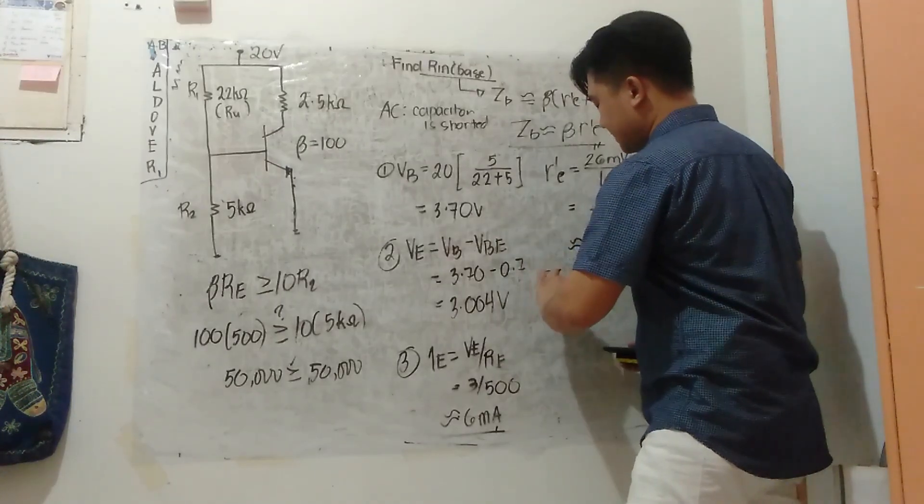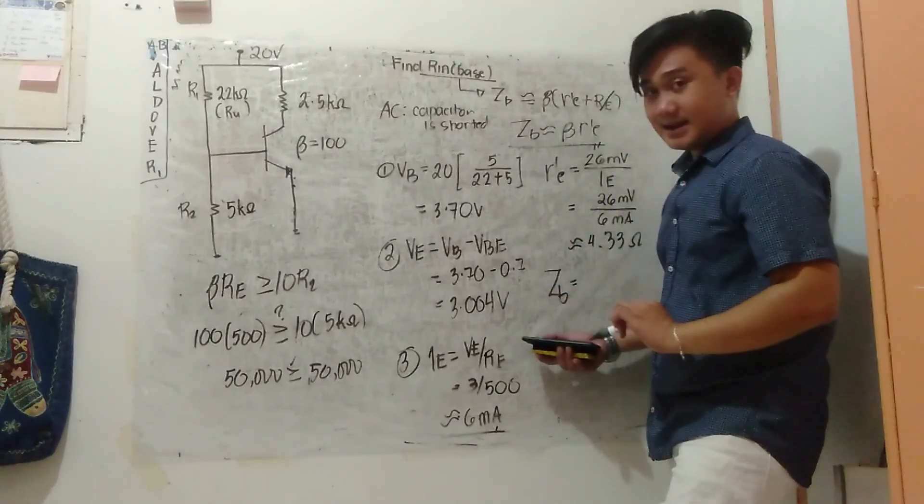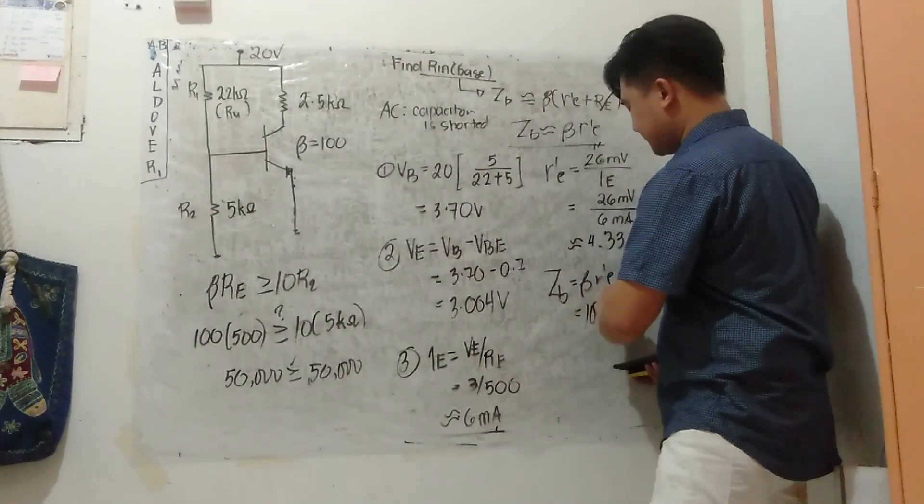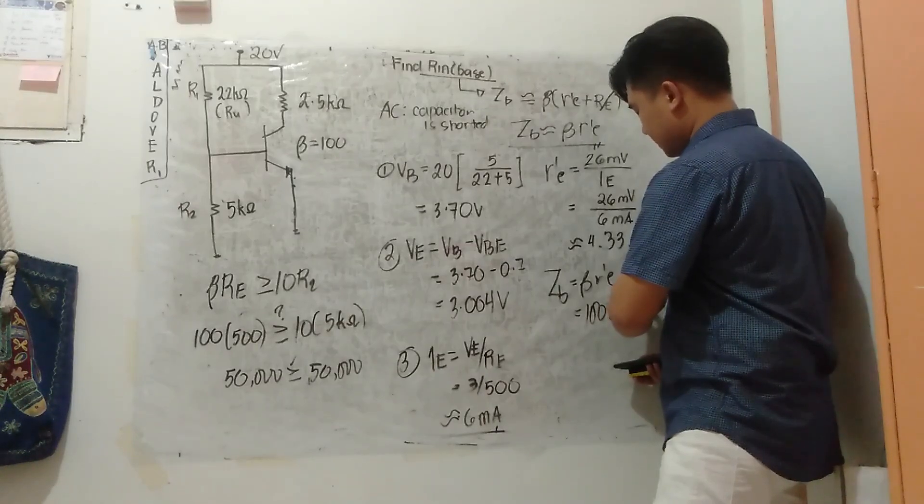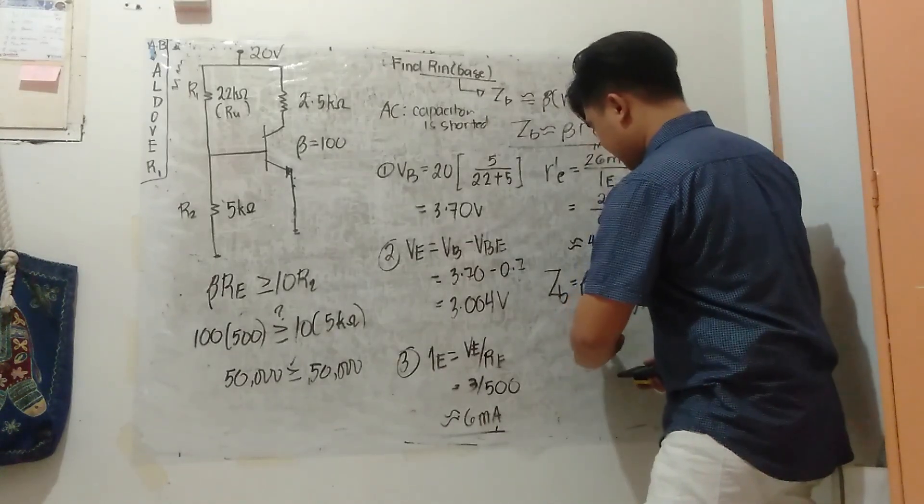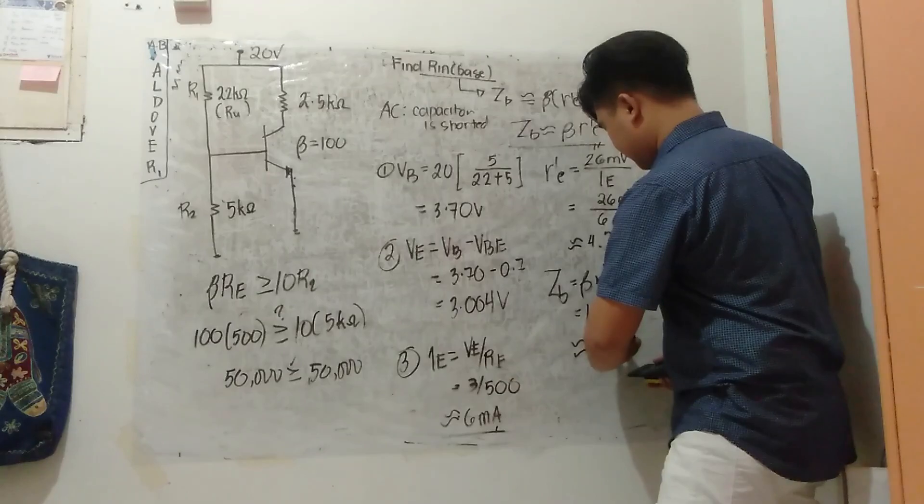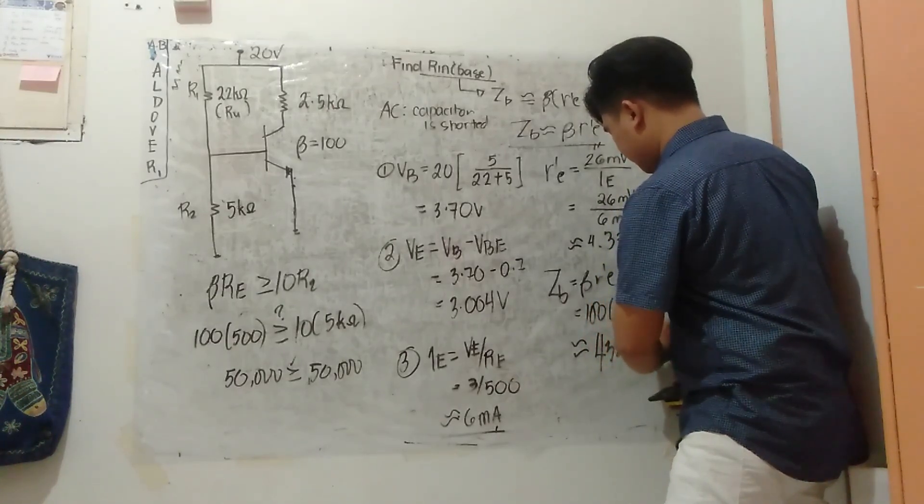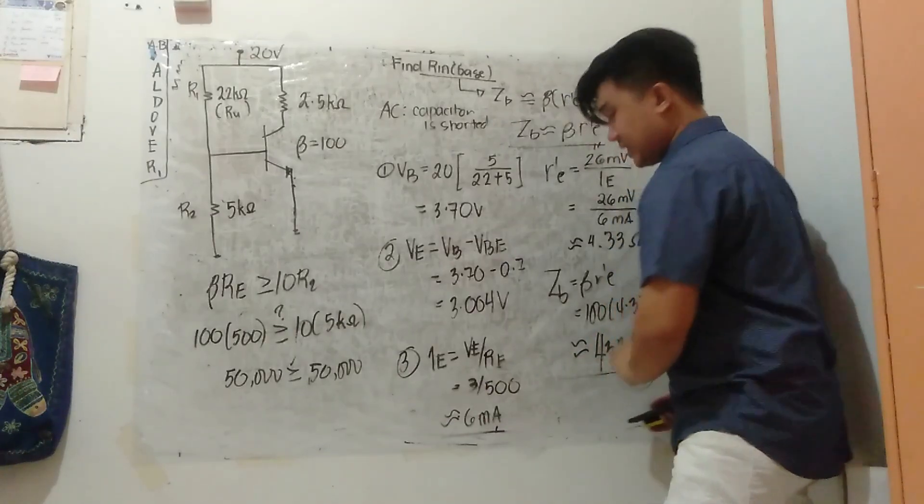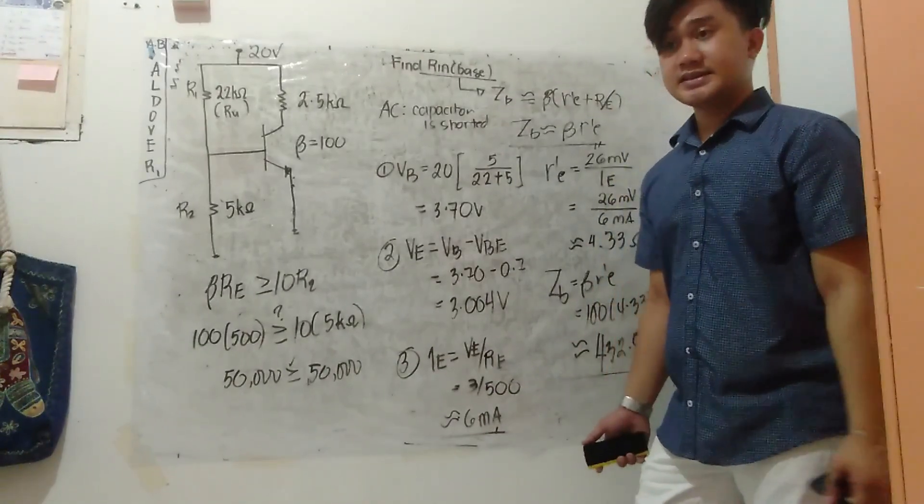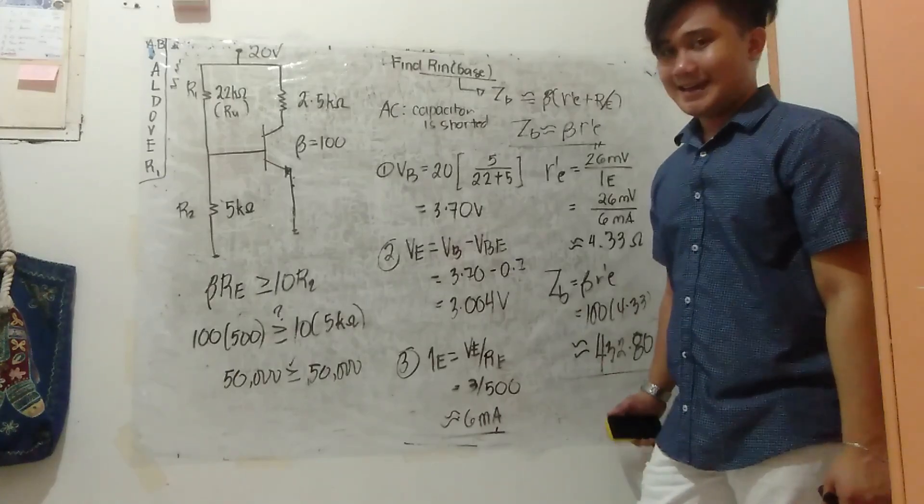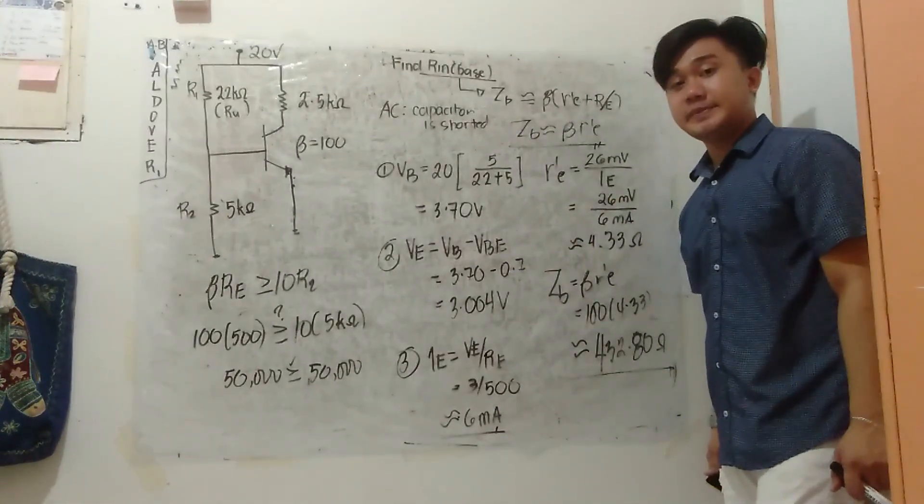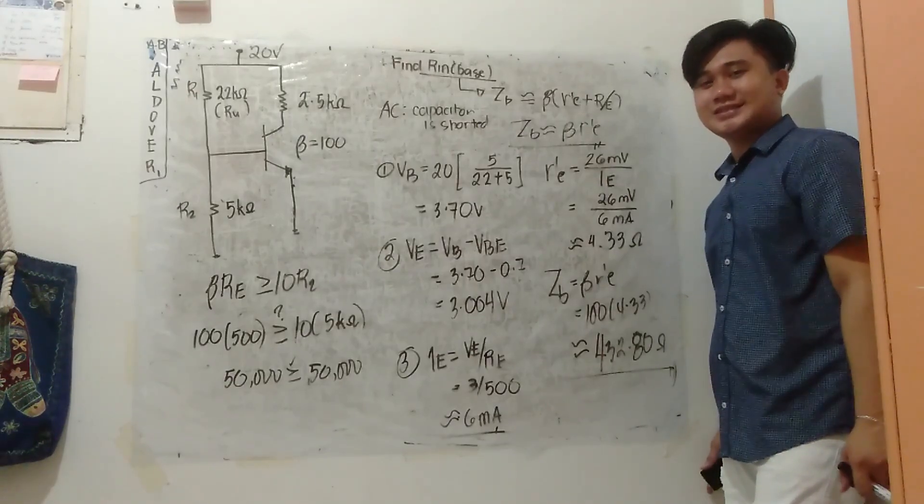Now to find ZB, that's beta R'E. So that's 100 times 4.33, or approximately 432.78 ohms. So choose the closest in the choices, and that is letter A. That's how you solve for ZB in engineering. Copy your notes.